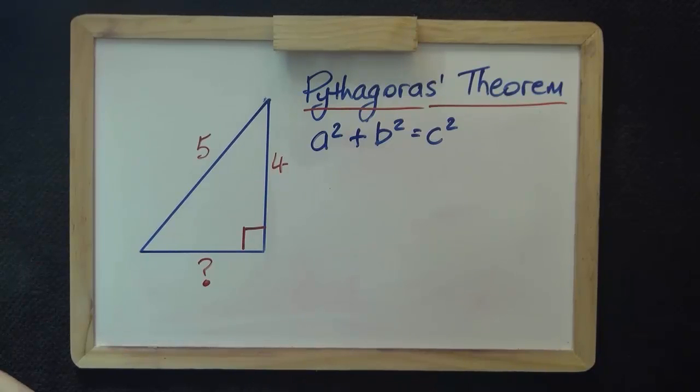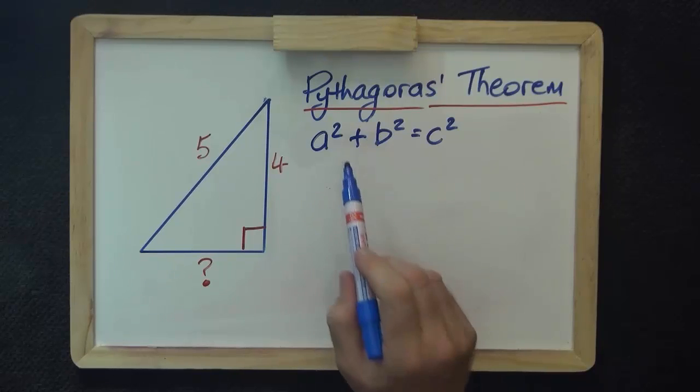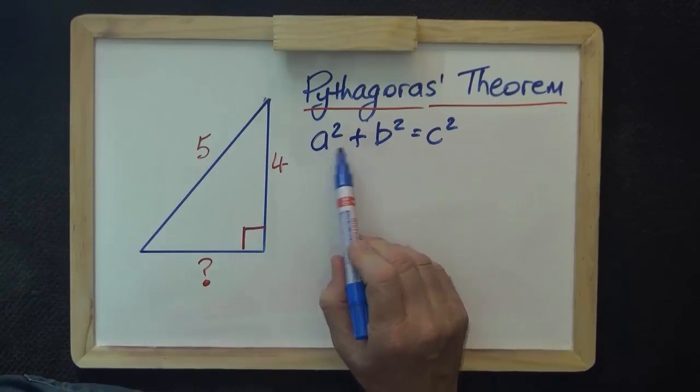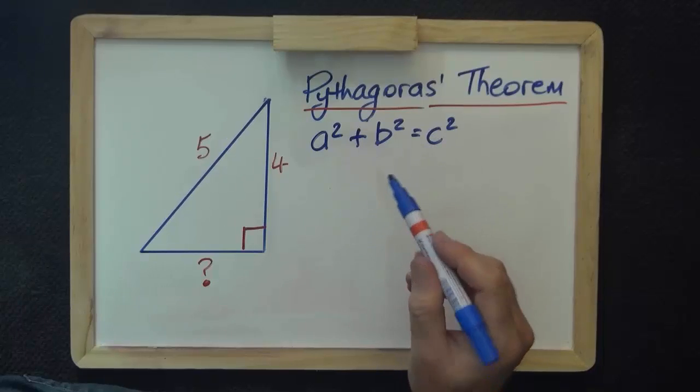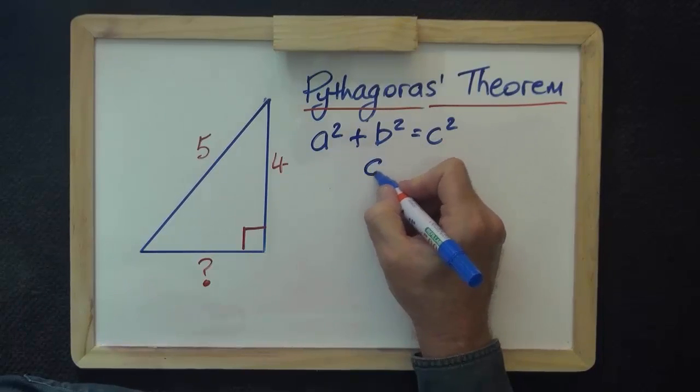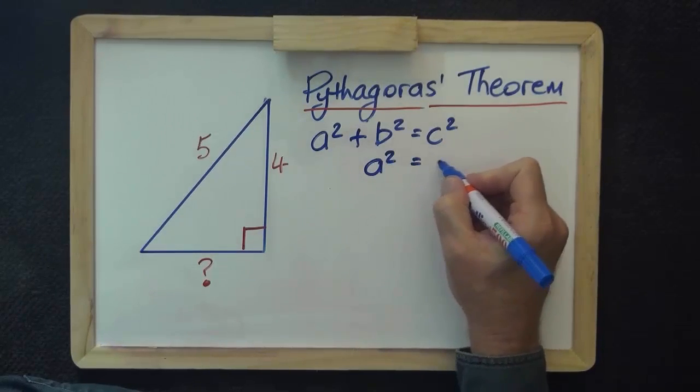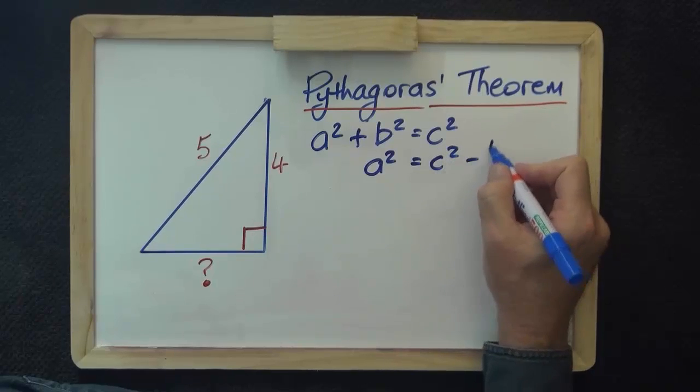We can use our formula, which we can express like this: a² + b² = c², and leave a on one side, a squared, and we get c squared minus b squared.